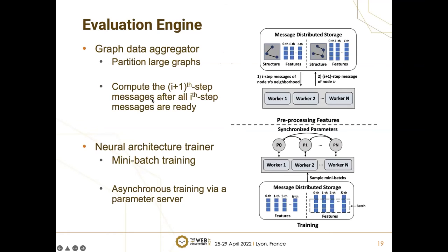The second component of PASCA is the evaluation engine, responsible for evaluating instances in a distributed manner. For the pre-processing and post-processing stages, the graph data aggregator partitions the graph into several parts stored on different machines. For each node, once the SGAP messages are complete, workers fetch neighborhood messages and compute the next-step message. For the training stage, each worker samples a batch of data from a single machine, and the neural architecture trainer implements a parameter server so gradients can be updated asynchronously.